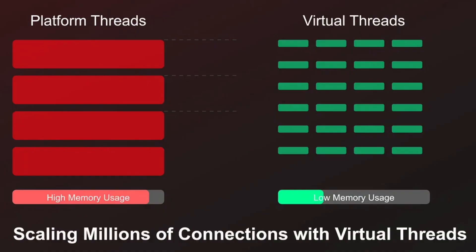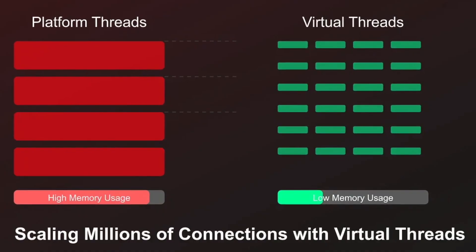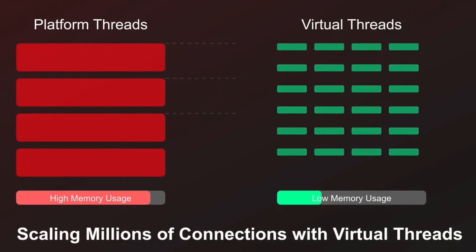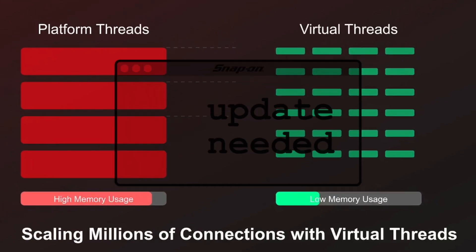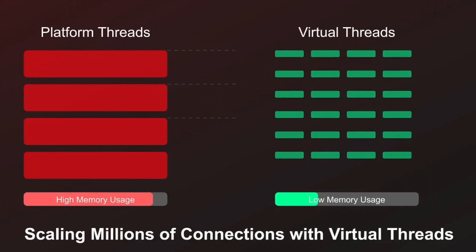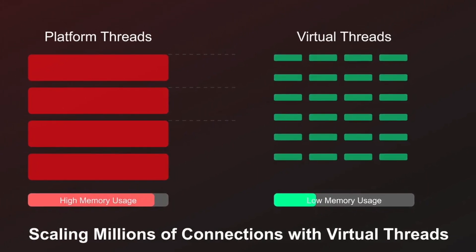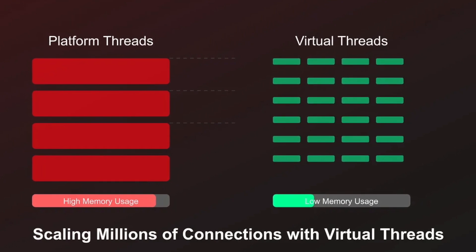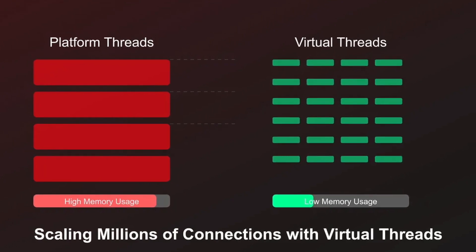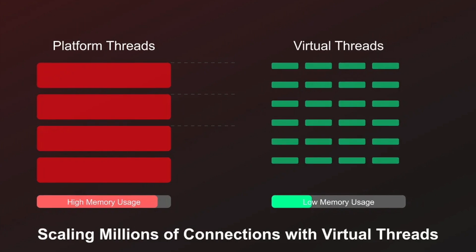But wait — Java finally realized it doesn't need a whole megabyte to say hello. In Java 21, virtual threads have arrived. They are lightweight like goroutines, starting at about 4 kilobytes each. So now both Java and Go can affordably handle thousands of concurrent connections without complex thread pools or manual management.